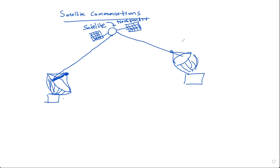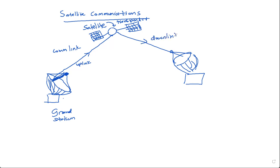So basically, we have the ground station, the satellite, and then the communication link. The communication link consists of the uplink and the downlink. There is a standard frequency used for uplink communications and a standard frequency used for downlink communications — that is the general practice.